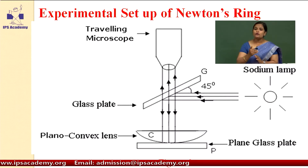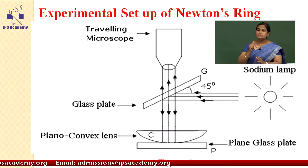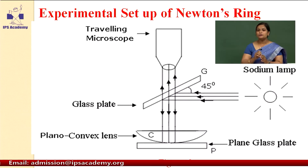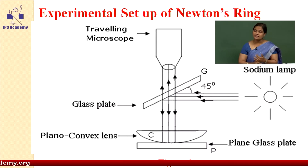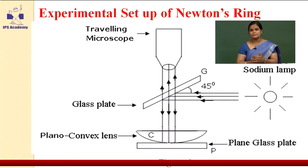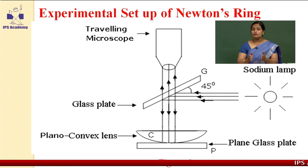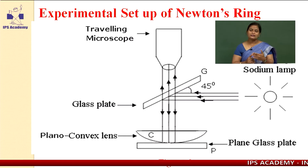There is a reflection of light at point C and at the centre of plate P. So interference occurs between the two light beams reflecting from the plain glass plate and the bottom of the plano-convex lens. The fringes are observed in the region of the air film formed between the plano-convex lens and the plain glass plate.